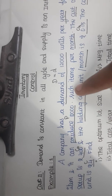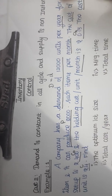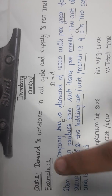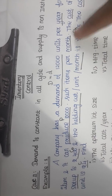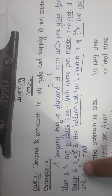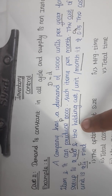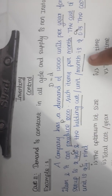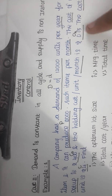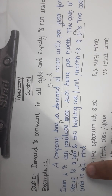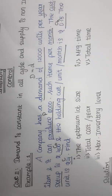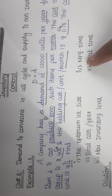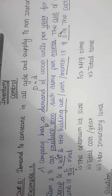This company has a demand of 12,000 units per year for an item, and it can produce 2,000 such items per month. The cost of one setup is Rs 400, and the holding cost per unit per month is Rs 0.15. We need to find the optimum lot size, total cost per year, maximum inventory level, manufacturing time, and total time.